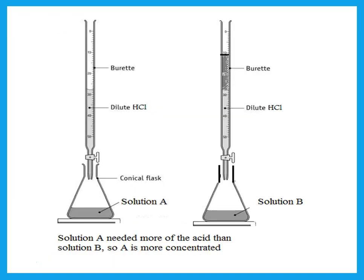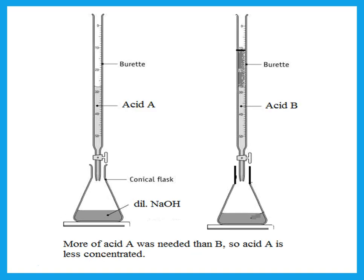If two solutions A and B are compared, the one that uses more acid is more concentrated. But sometimes two different acids A and B are in the burette and we want to know which is more concentrated. With the same sodium hydroxide in the flask, if acid A needed 28 cm³ but acid B needed less to neutralize it, the one needed in less quantity is more concentrated. So acid A is less concentrated than acid B.